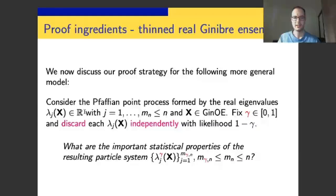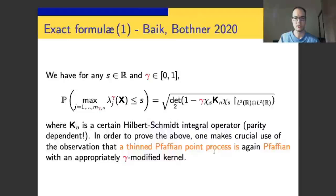You start with the real eigenvalues in the real-Ginibre ensemble. It is known for about 10 years that those form a Pfaffian point process. Now, what you can do is you can thin out the process. Fix your parameter γ, and then throw out each particle independently with likelihood 1 minus γ. That yields another point process.